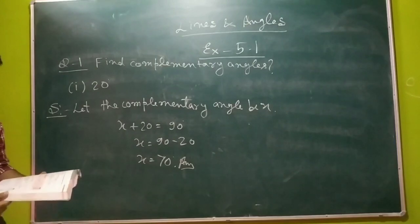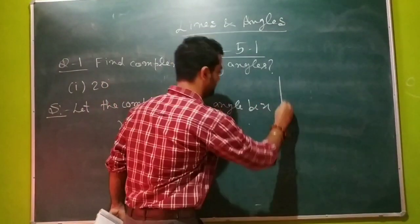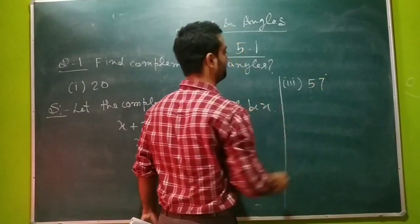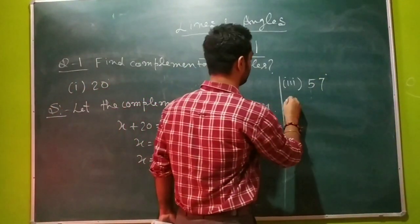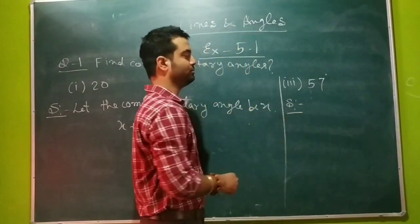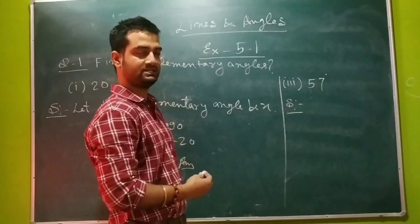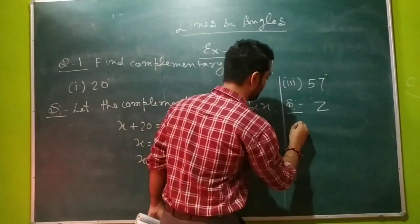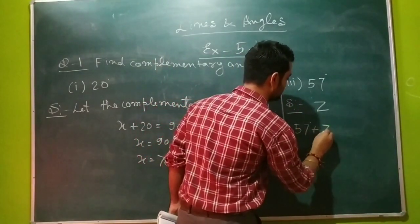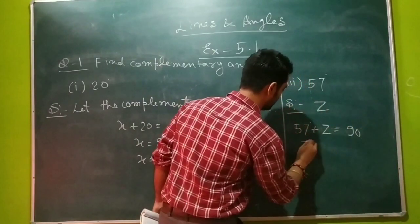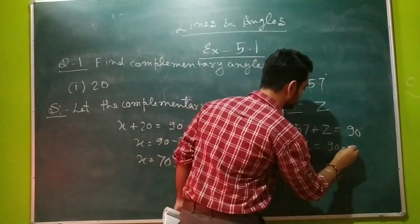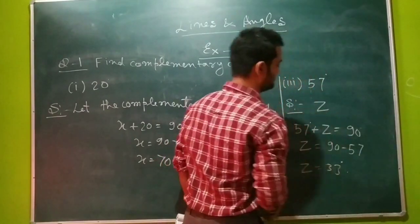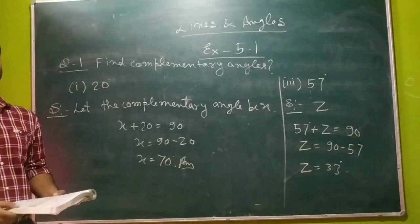Now we are coming to the third question, which is to find out the complementary angle of 57 degrees. In the same way we can solve for 57 degrees. Suppose the complementary angle of 57 degrees is angle z. We will form the equation: 57 degrees plus z equals 90 degrees. So the value of z is 90 minus 57, which gives us 33 degrees. So we have understood the solution of the first question.